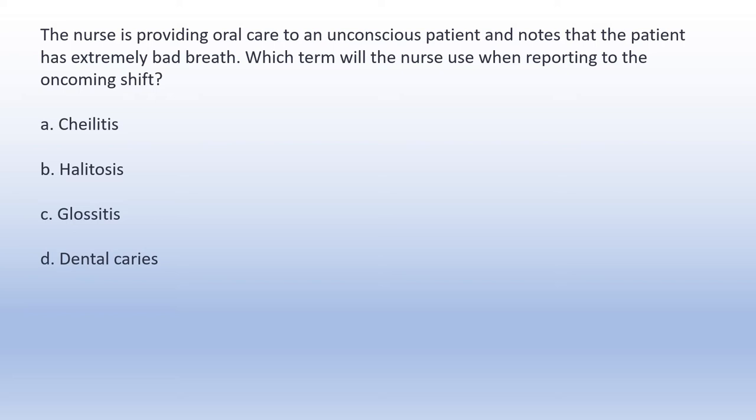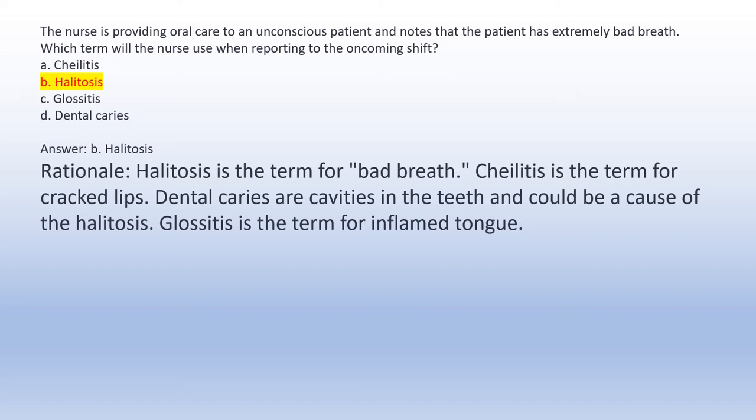The nurse is providing oral care to an unconscious patient and notes that the patient has extremely bad breath. Which term will the nurse use when reporting to the oncoming shift? A. Cheilitis. B. Halitosis. C. Glossitis. D. Dental caries. Answer B: Halitosis. Rationale: Halitosis is the term for bad breath. Cheilitis is the term for cracked lips. Dental caries are cavities in the teeth and could be a cause of the halitosis. Glossitis is the term for inflamed tongue.